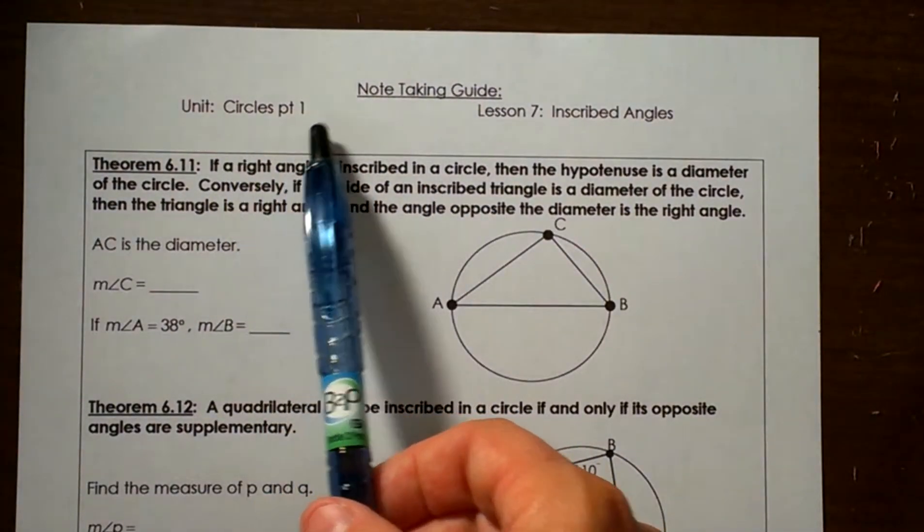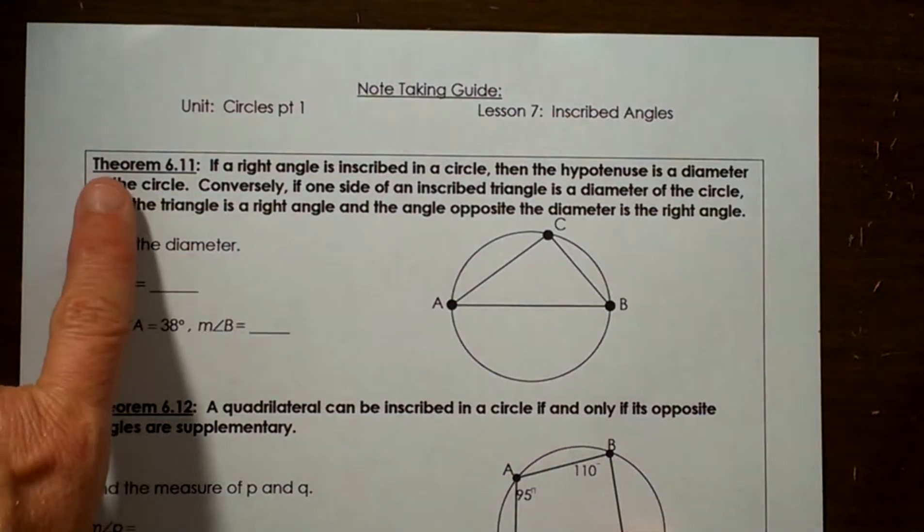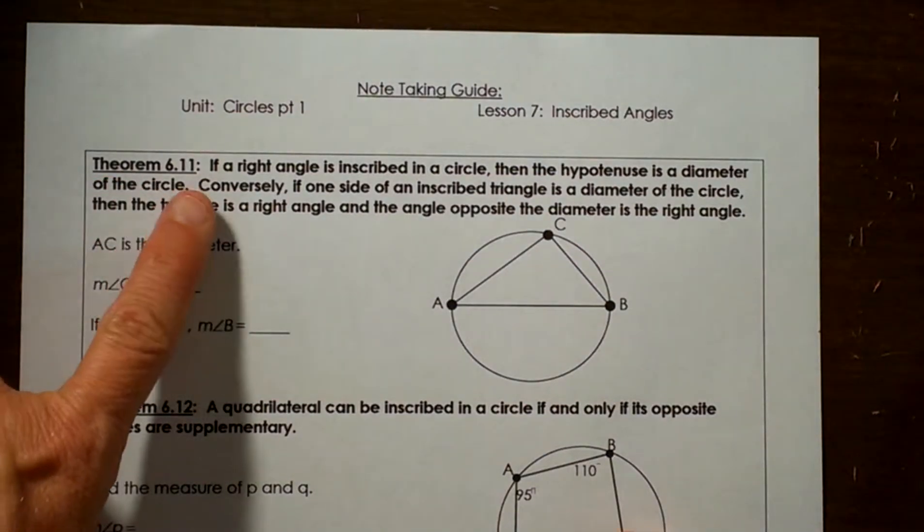We're finishing up Circles Part 1, Lesson 7: Inscribed Angles. Okay, let's look at our theorem. This is theorem 6.11.